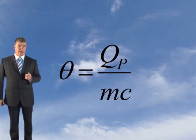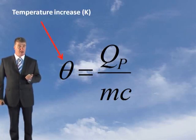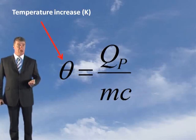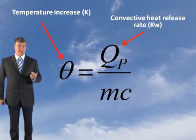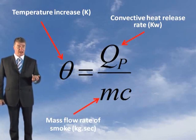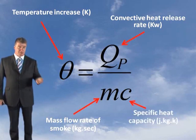Firstly, we need to determine the temperature increase in the smoke. The formula to apply is: theta equals Qp divided by m times c, where theta is the temperature increase, Qp is the convective heat release rate, m is the mass flow rate of smoke, and c is the specific heat capacity of the smoke.